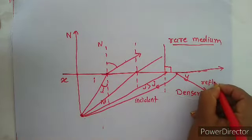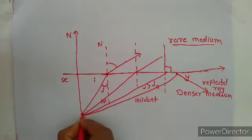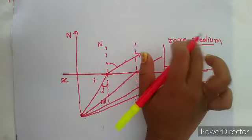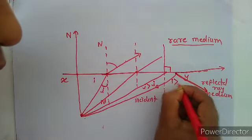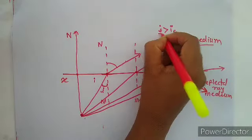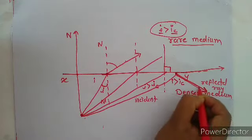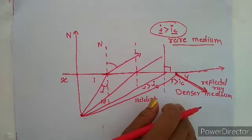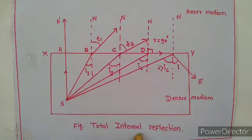In a certain situation, this angle becomes 90 degrees — this is called the critical angle. When the incident angle is greater than the critical angle, the light rays from the denser medium get only reflected back into the denser medium. This is the incident ray and this is the reflected ray. This phenomenon is called total internal reflection. This is the diagram for total internal reflection.